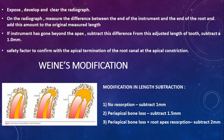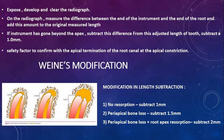Wien's modification provides adjustments based on periapical conditions. If there is no resorption and optimal periapical condition, subtract 1 mm. If there is periapical bone loss, subtract 1.5 mm. If there is periapical bone loss with root apex resorption, subtract 2 mm. These modifications are very important to know for those three specific clinical conditions.